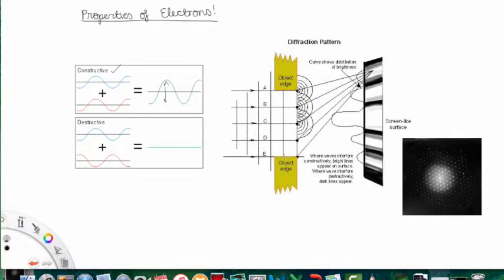But the crazy thing is that electrons passing through a crystal also show diffraction. This is an example of electrons passing through a crystal and you see these patterns, the light parts and the dark parts of constructive and destructive interference. So what does this mean? It means that electrons must have wave-like properties.